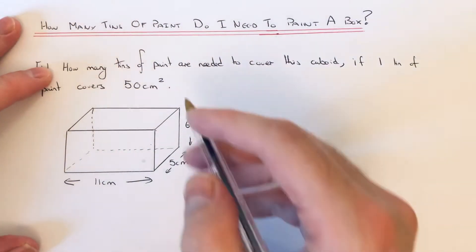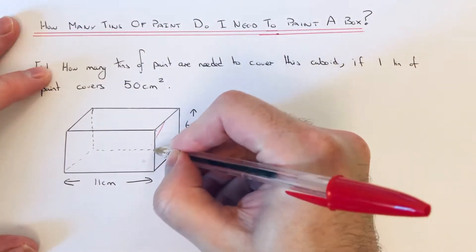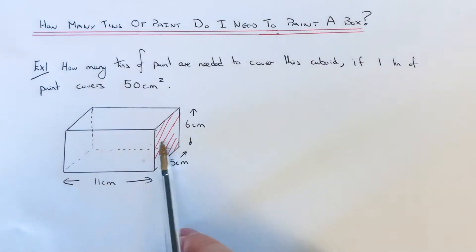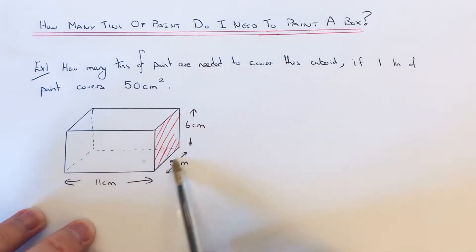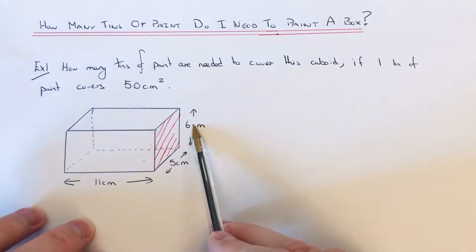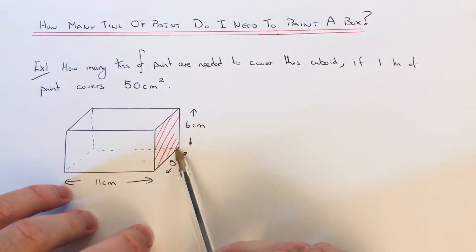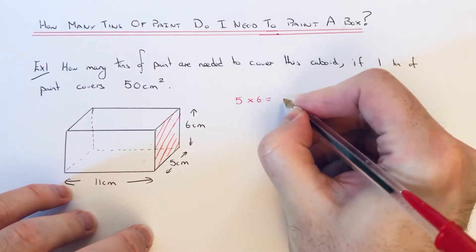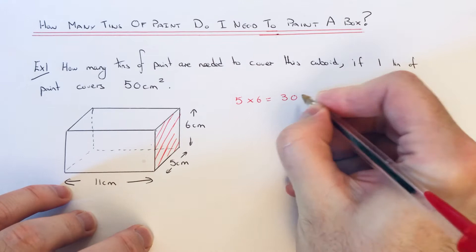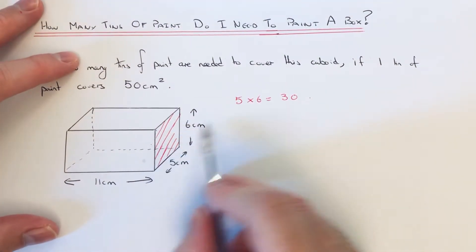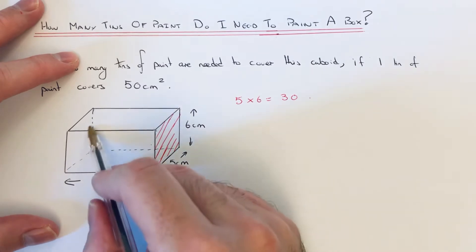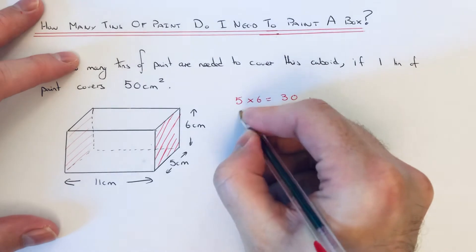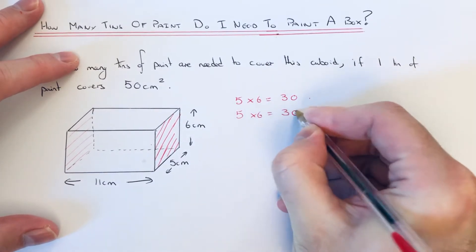Let's start off with the right-hand side face. To find the area of this rectangle here, you need to multiply the length by the width. So for this one, it's going to be 5 times 6. 5 times 6 is 30. Now I'm going to write this one down again because the right face is the same as the face over here on the left side.